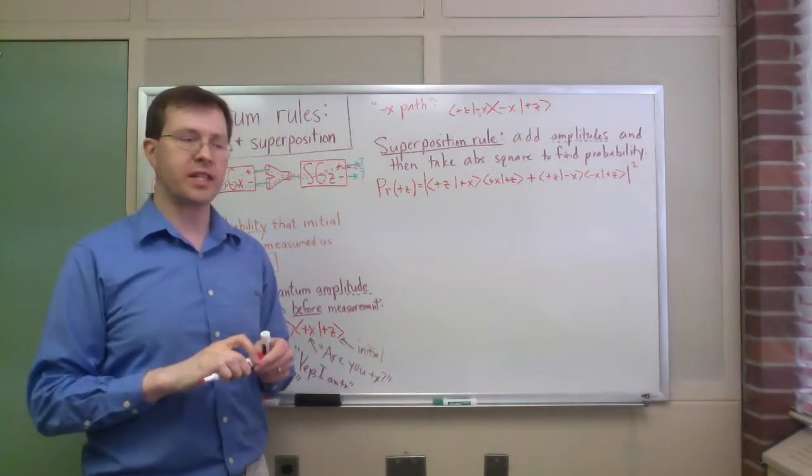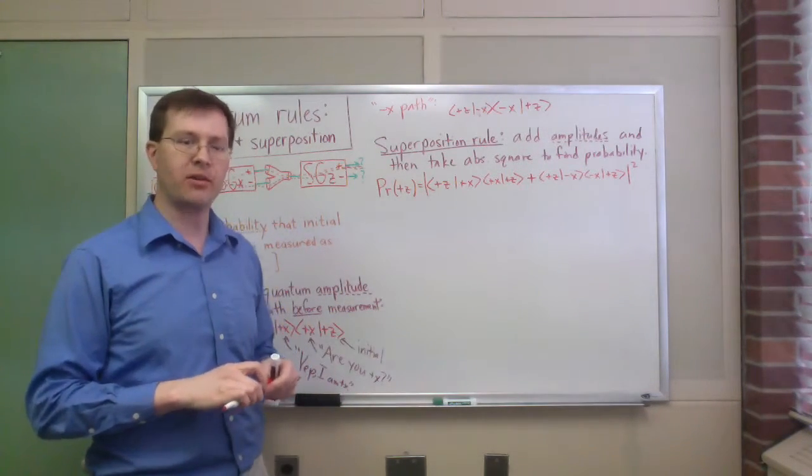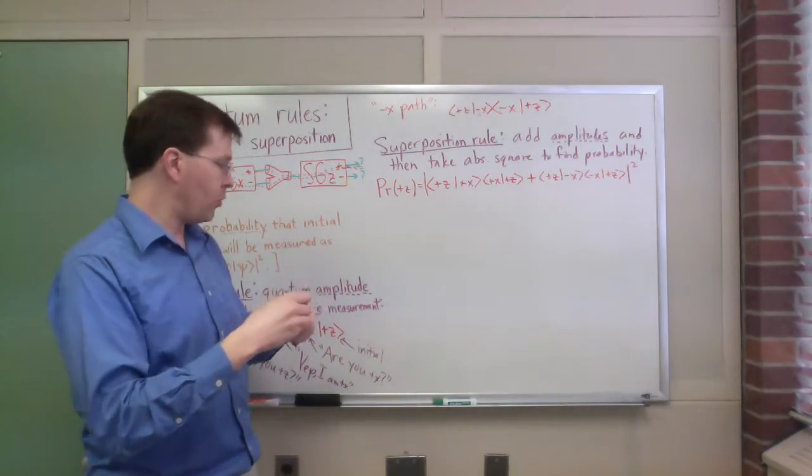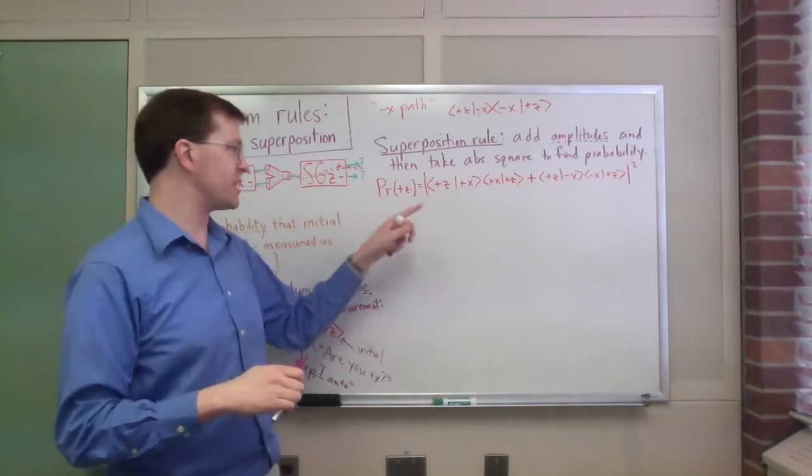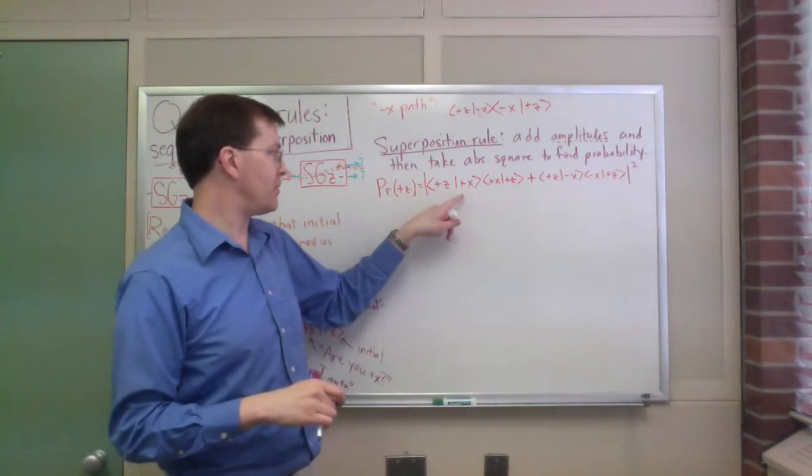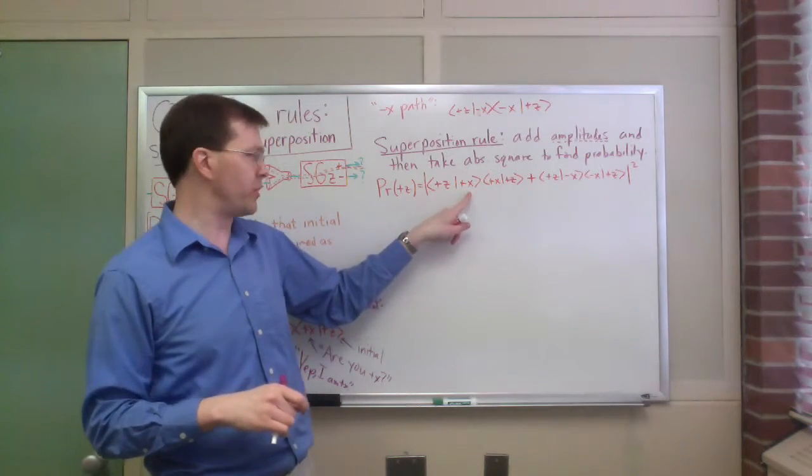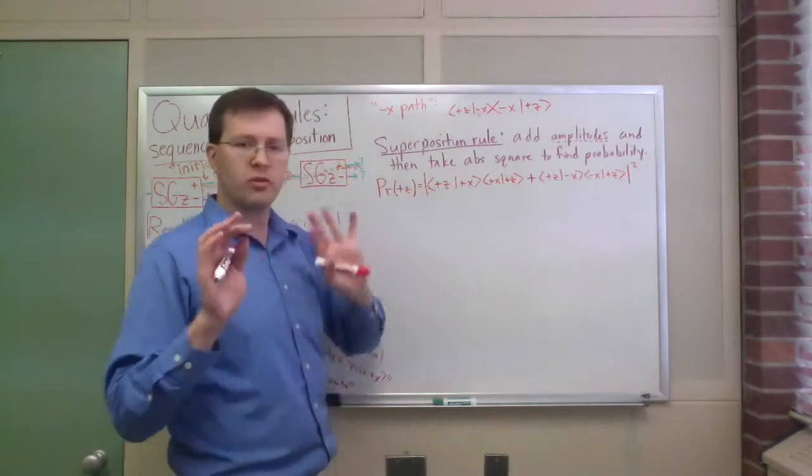Now let's work out what this is. You can check at home what these quantities come out to be. I happen to know what they all come out to be, so I'm just going to put it there. The idea really is that the plus z is a one zero vector in our usual Sz basis. The plus x is one over square root of two, one over square root of two. This is one over square root of two, minus one over square root of two. You can check this at home.